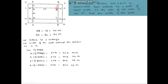For quadrilateral BONC, the length is 30 meter as BC = 30 meter, and the breadth is the width of the path which is x. So the area of quadrilateral BONC = length × breadth = 30 × x = 30x square meters. Similarly, for quadrilateral LADM, which is a rectangle with length 30 meter and breadth x meter, its area = 30 × x = 30x square meters.